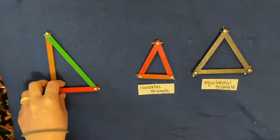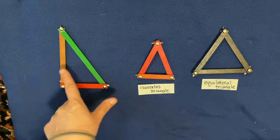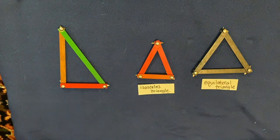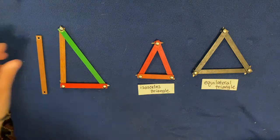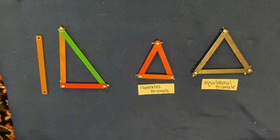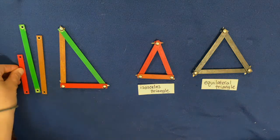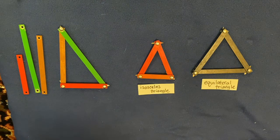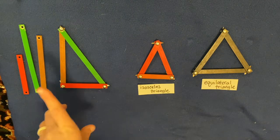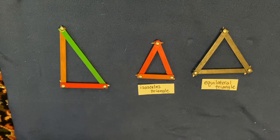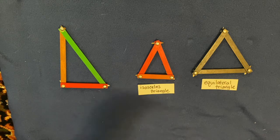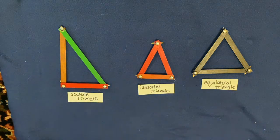Now this triangle as you can see is made up of three different sticks all different colors. We have a brown stick, a green stick, and a red stick. These are all different lengths. A triangle whose sides are all different in length is called a scalene triangle.